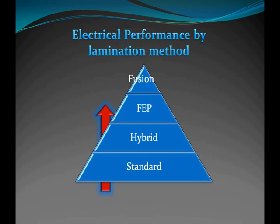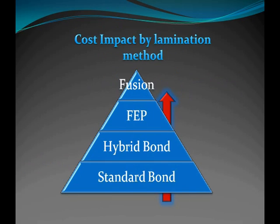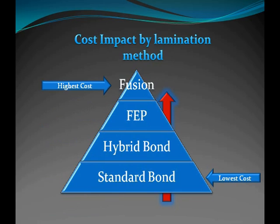The four major types of lamination in order of electrical performance from low to high are: standard being the lowest, followed by hybrid, then FEP lamination, and finally the top performer, fusion bonding. Performance is impacted by both the material properties and lamination method used. In terms of cost impact, fusion bonding is the highest cost, followed closely by FEP, then hybrid, and the lowest cost is standard lamination. Cost is impacted by a combination of material and labor cost associated with lamination type.